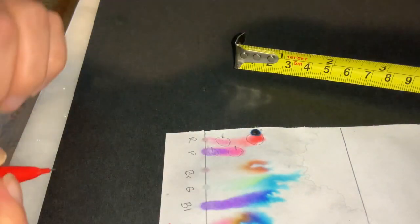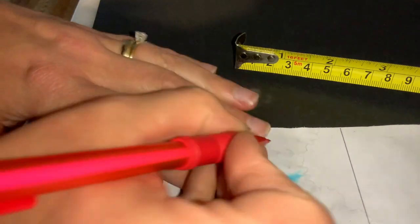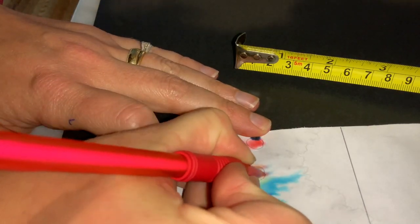Now our brown didn't really separate too much. It looks like most of it moved, so we're just going to look at this spot.